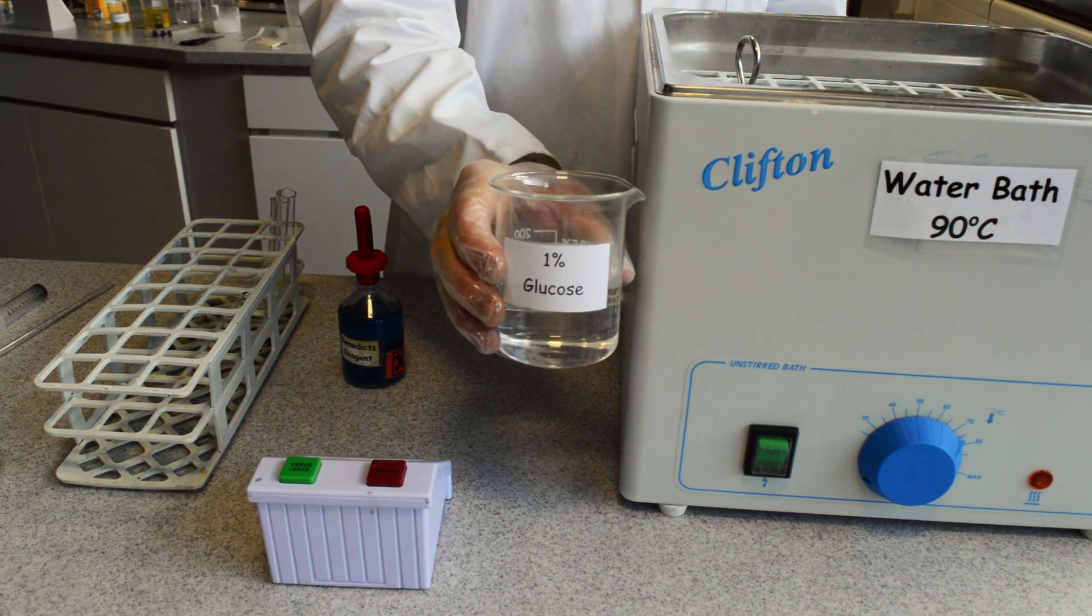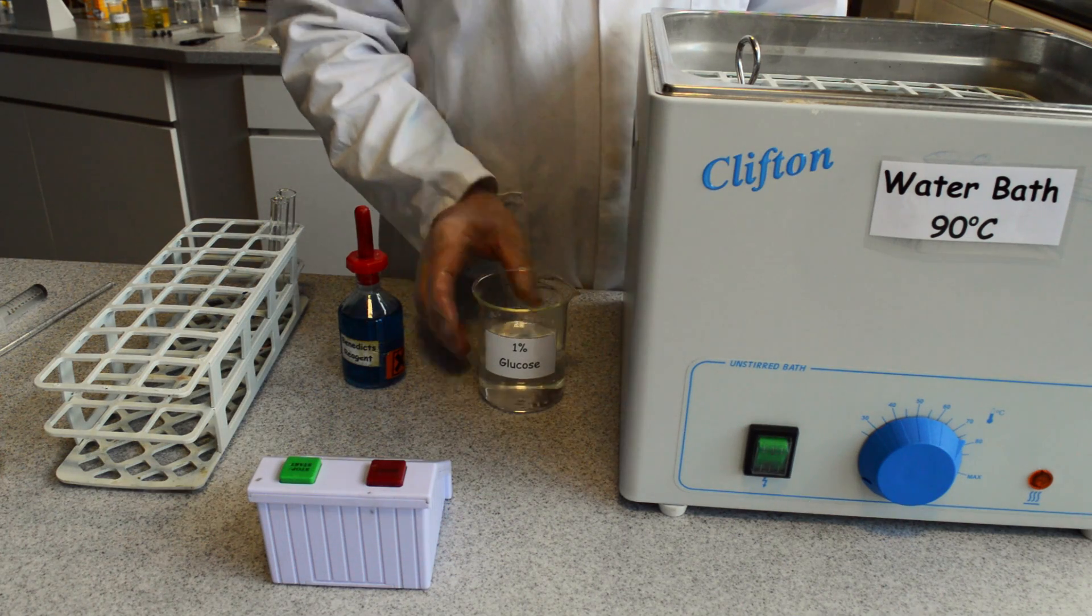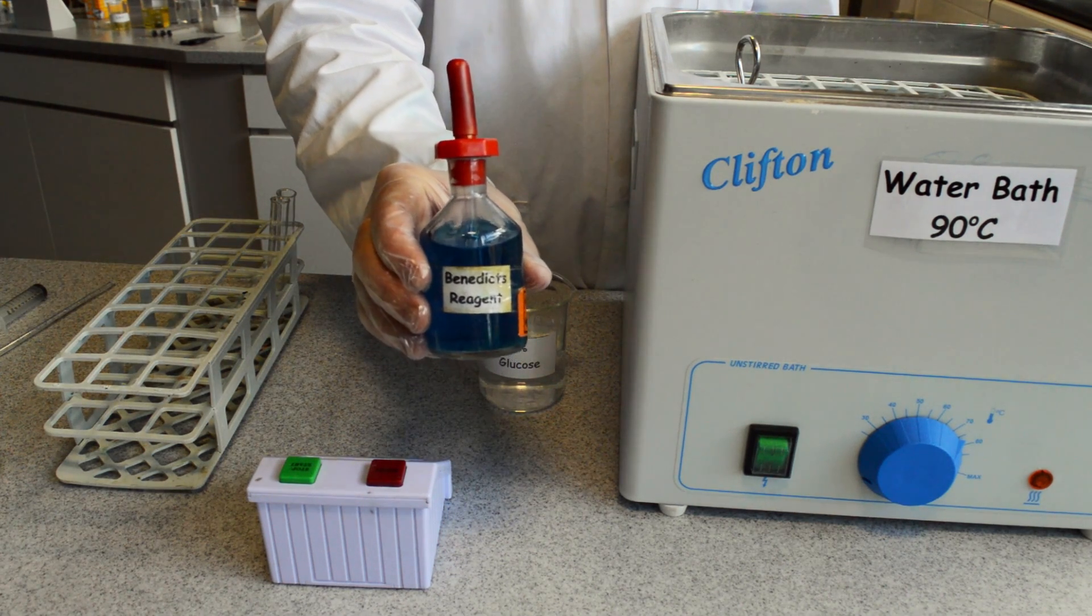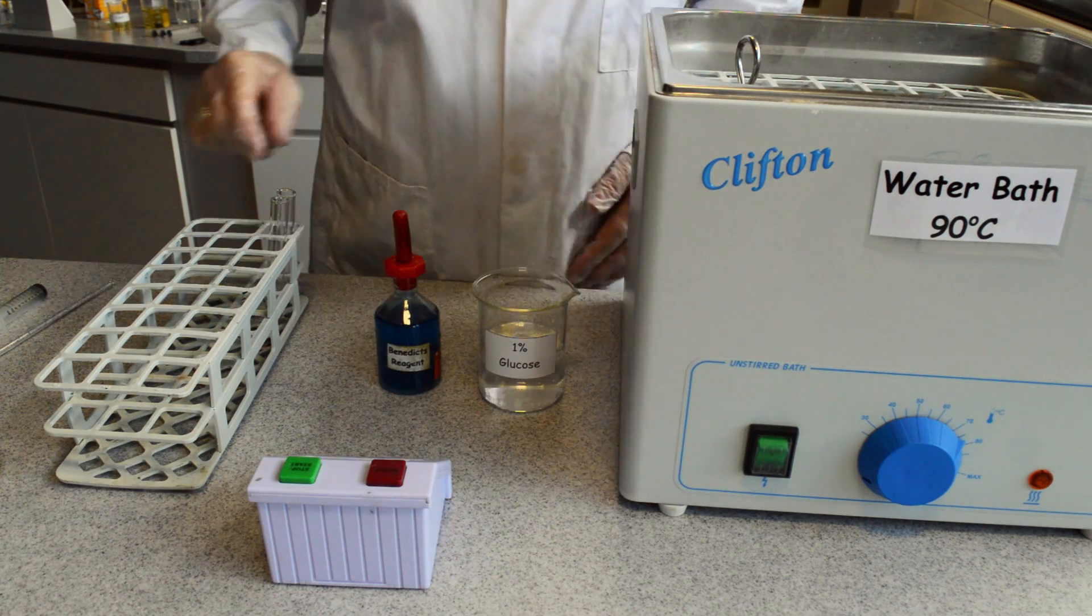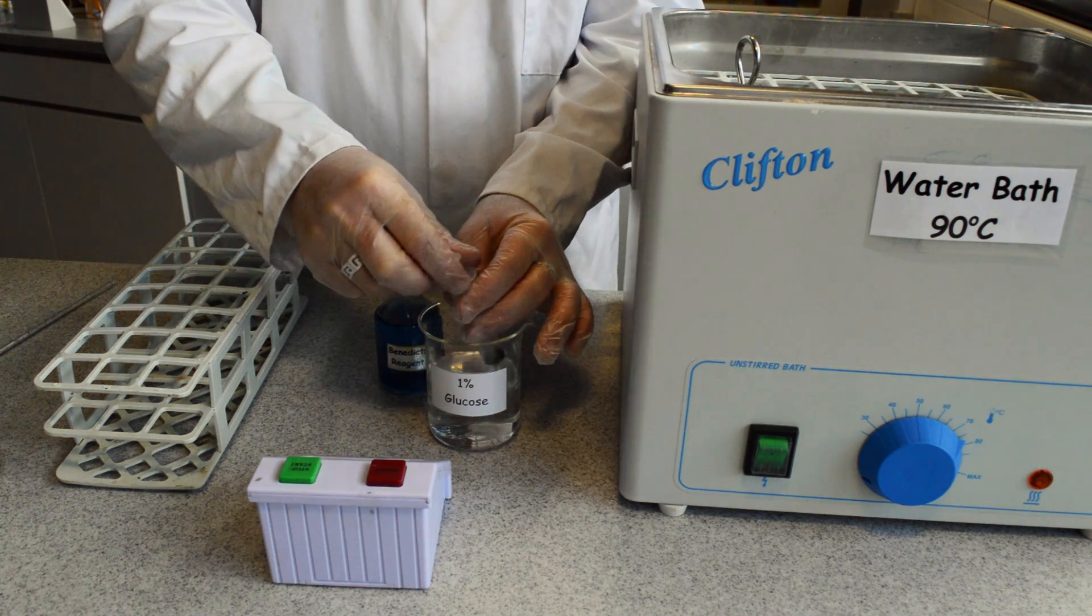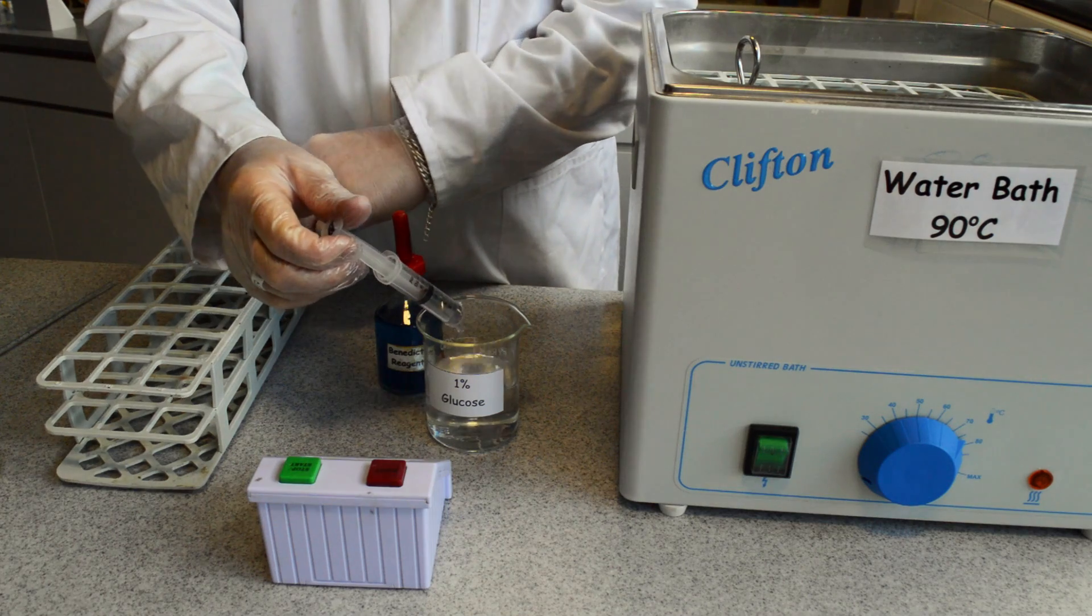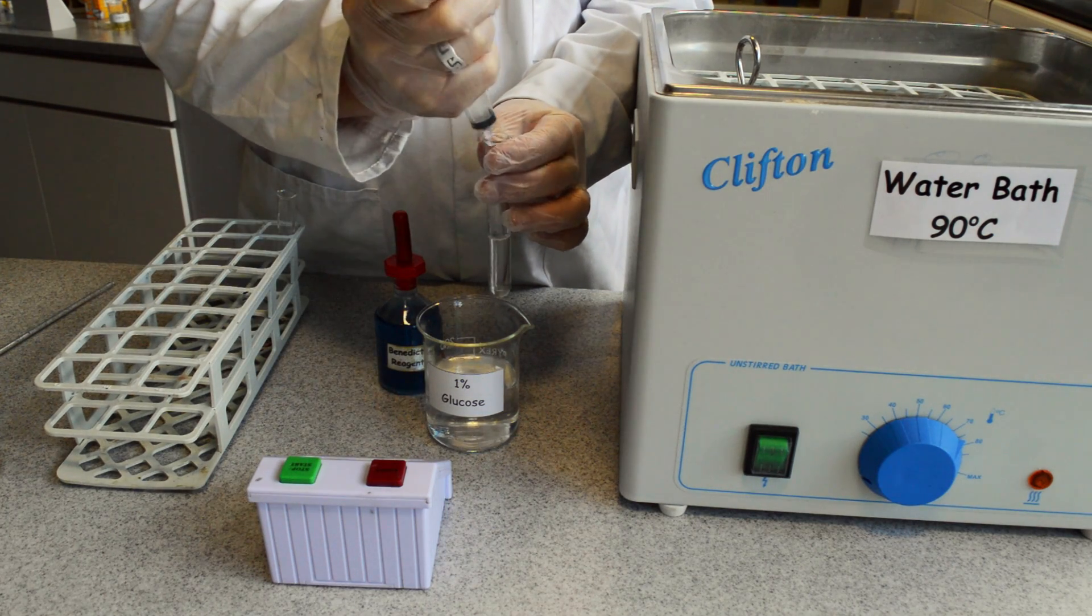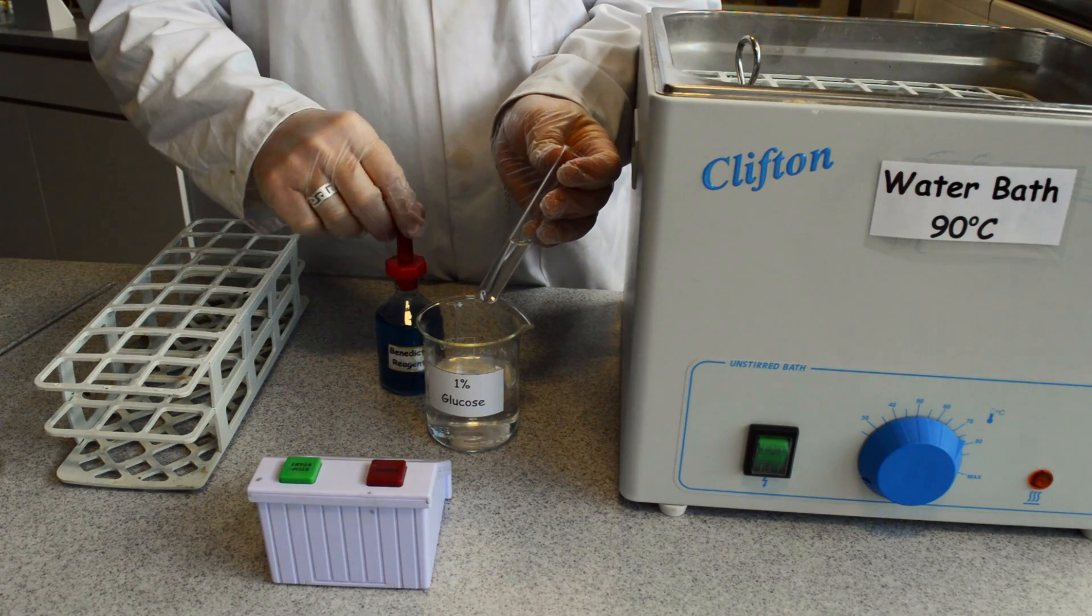Testing for glucose, a reducing sugar. This uses Benedict's reagent. Place about 5 ml of your glucose solution into a test tube. Then add several drops of the Benedict's reagent.